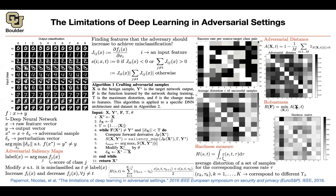A student asks why we take a minimum rather than a sum for robustness. The answer is that you're looking at the worst-case scenario. You could also take an average. Another student asks whether we should leave out the diagonal of the adversarial distance matrix, since converting a zero to a zero is trivially easy and the off-diagonal elements are more interesting. The instructor agrees this is a reasonable point.